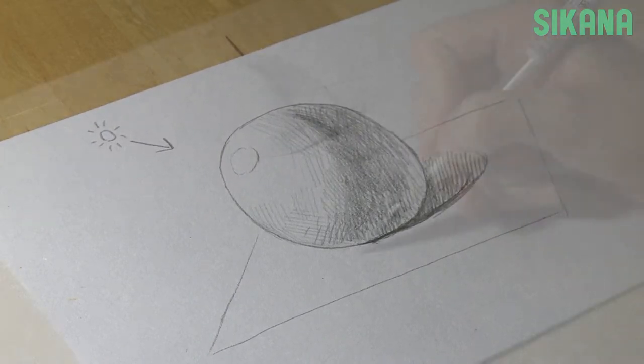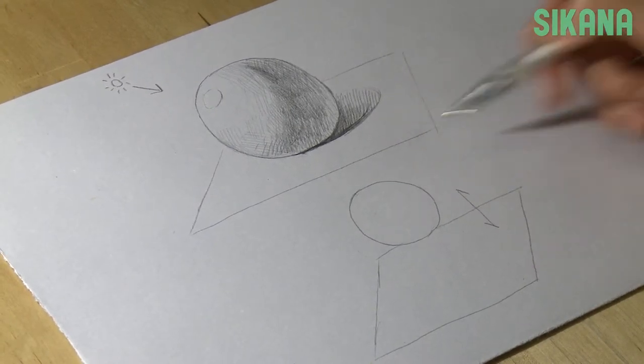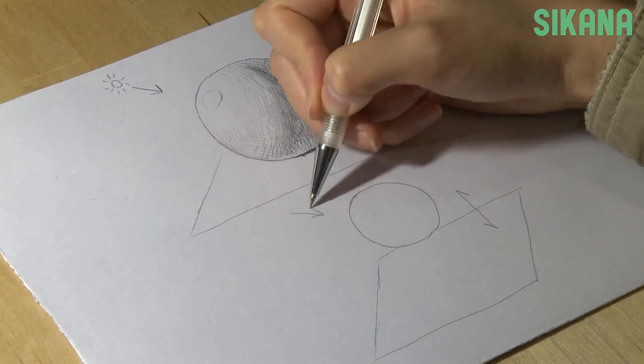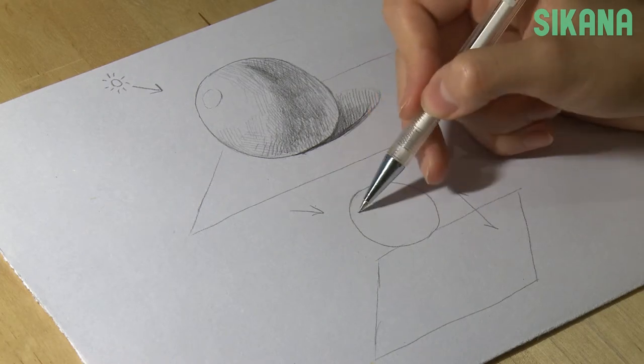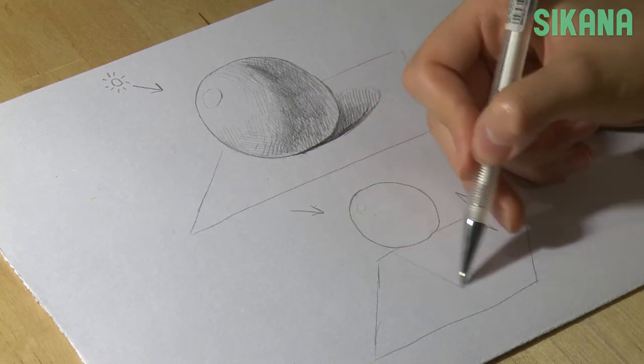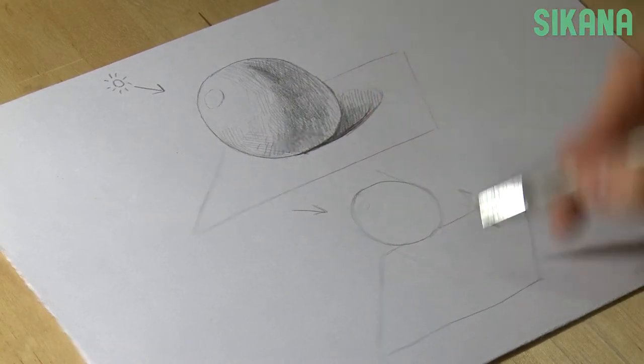If the ball is positioned in mid-air, the shadow will be drawn a bit differently. Since the light source remains the same, the position of the shadow will not change, but it will have a slightly different form.